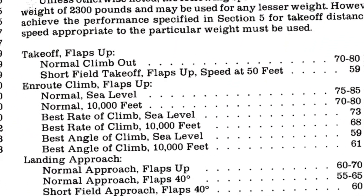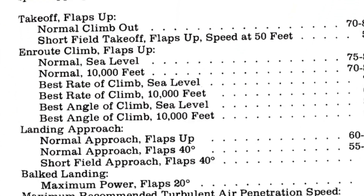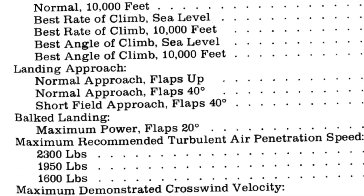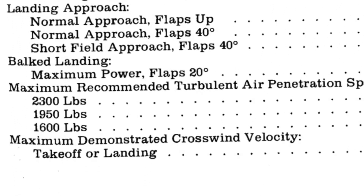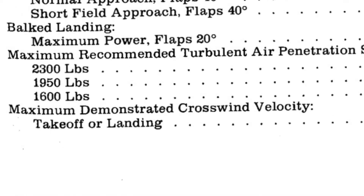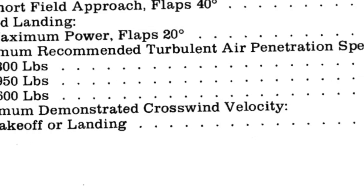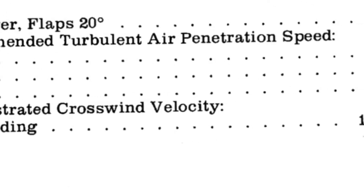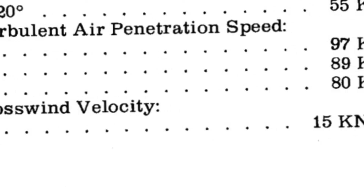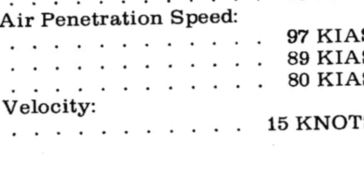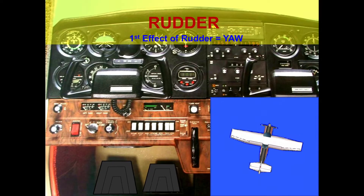Let's refer to the flight manual. Now some manufacturers specify an actual crosswind limit for their aeroplanes. Others state what is called a demonstrated crosswind velocity. This means a crosswind strength that the company test pilot determined as the safe maximum at which he or she could maintain good control of the aeroplane, rudder authority usually being the limiting factor.